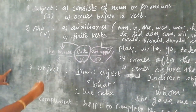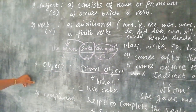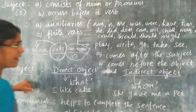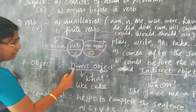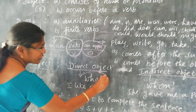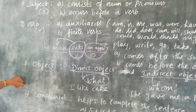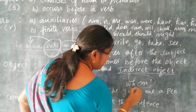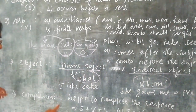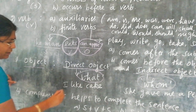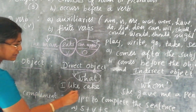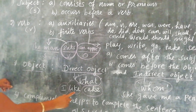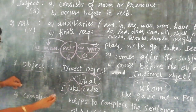Now let us see the object. There are two types of object: one is the direct object, and another one is the indirect object. The direct object answers the question 'what.' For example, 'I like cake.' Here, 'I' is the subject, 'like' is the verb, and 'cake' is the object — what do you like? I like cake.